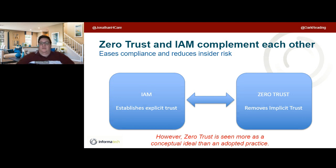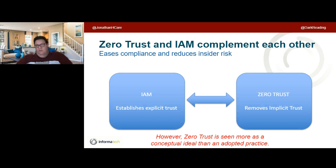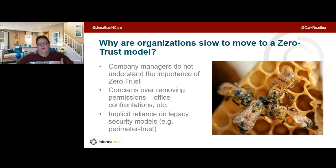IAM establishes explicit trust — it makes a strong, trustworthy, provable identity assertion. Zero trust removes implicit trust. Out in the world, zero trust is more a conceptual idea than an adopted practice. What's stopping us? Company managers don't understand the importance of zero trust. We hit the historical problem of how we talk to the board — framing risk management and risk tolerance in terms senior management understands, since for entrepreneurial leaders, risk is how they make money.